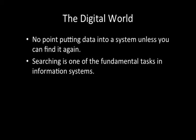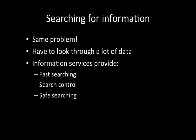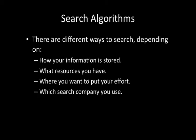The digital world is full of data and there's no point putting data into a system unless you can find it again and get it out. Searching of all sorts of forms is one of the fundamental tasks in an information system. When we're searching for information, we have exactly the same problem as when we were looking for dots in the middle of those images — we have to look through a lot of data. A good information service is going to provide a mechanism for fast searching. You'll remember that an algorithm is a set of instructions that we use to tell a computer what to do in order to solve a problem.